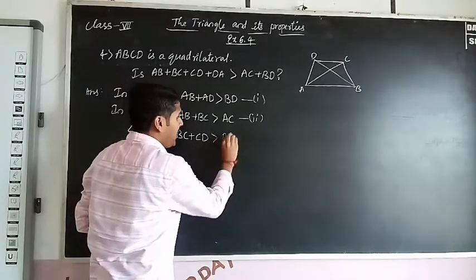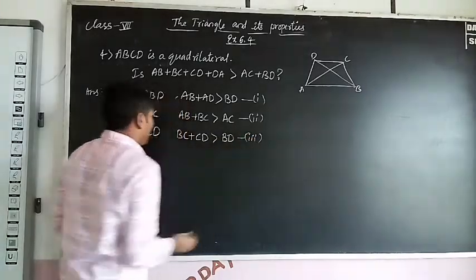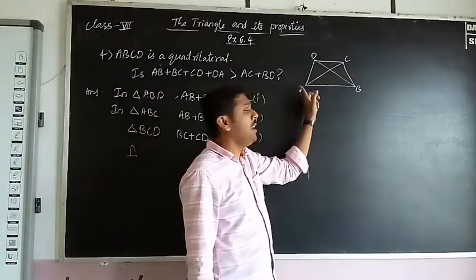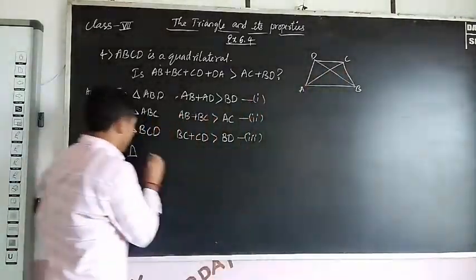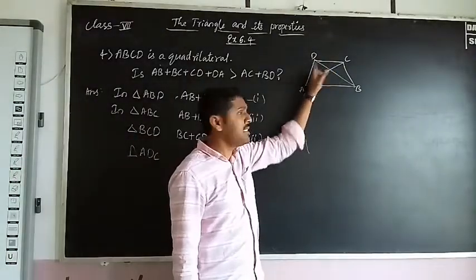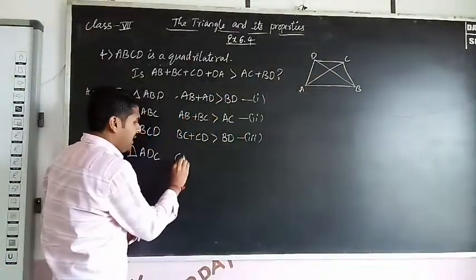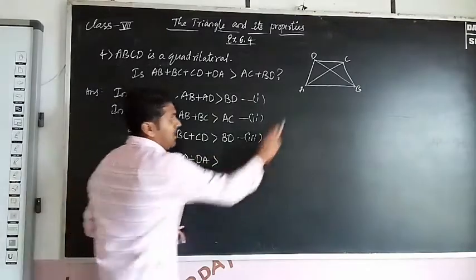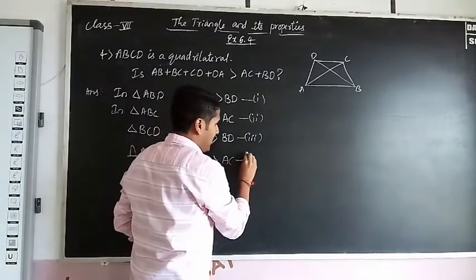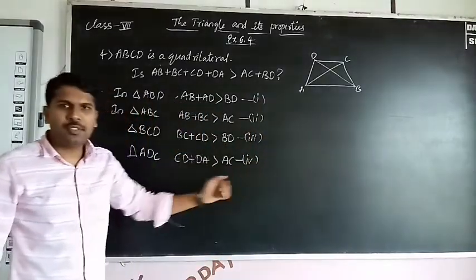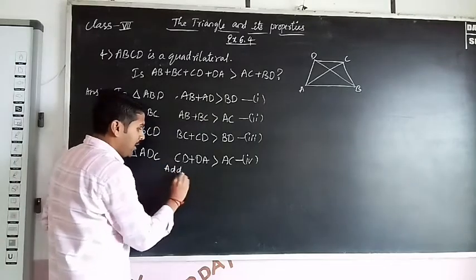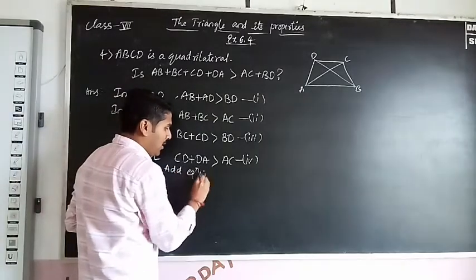This is three. Next the triangle, last one, CDA. CD + DA is greater than AC. Four equations you got now. So just add all four equations, add equation one, two, three, and four.